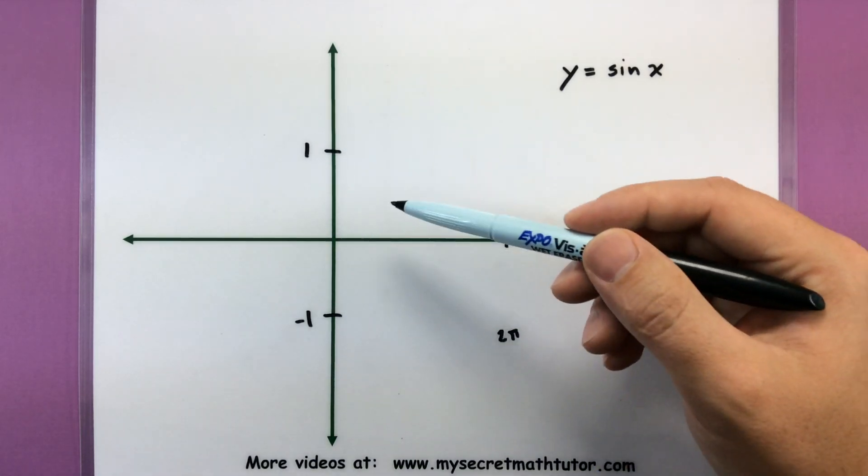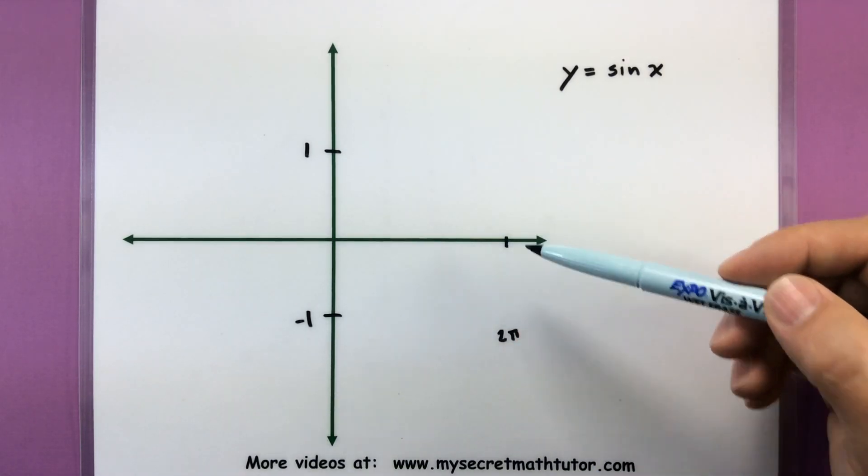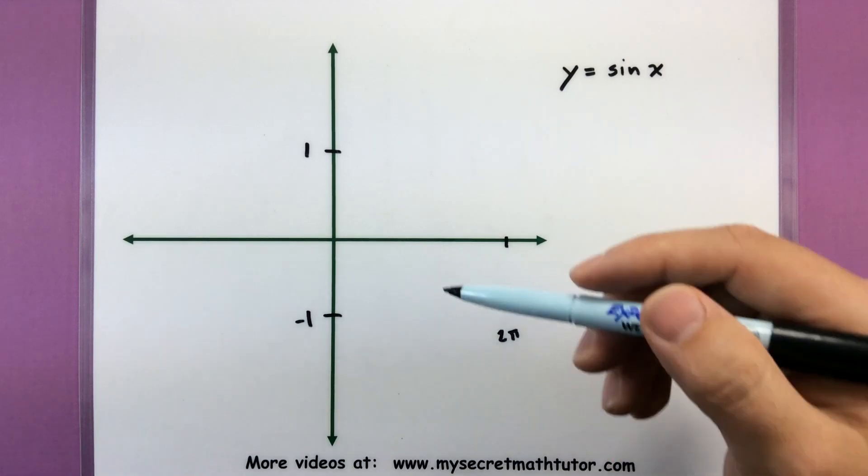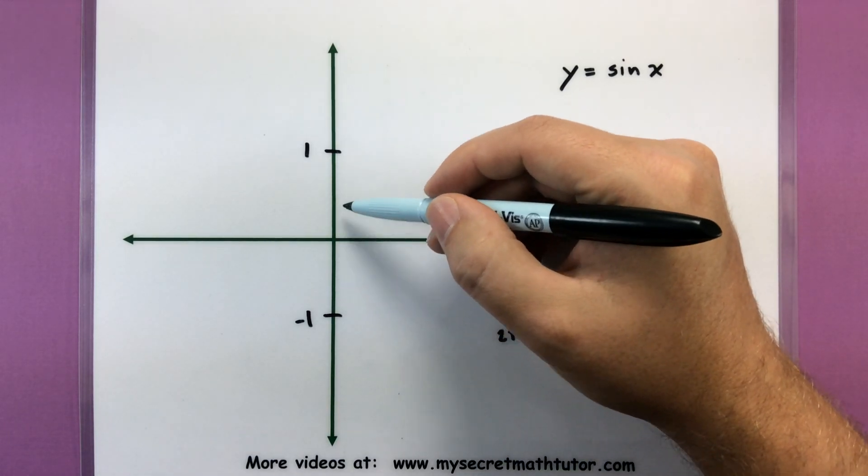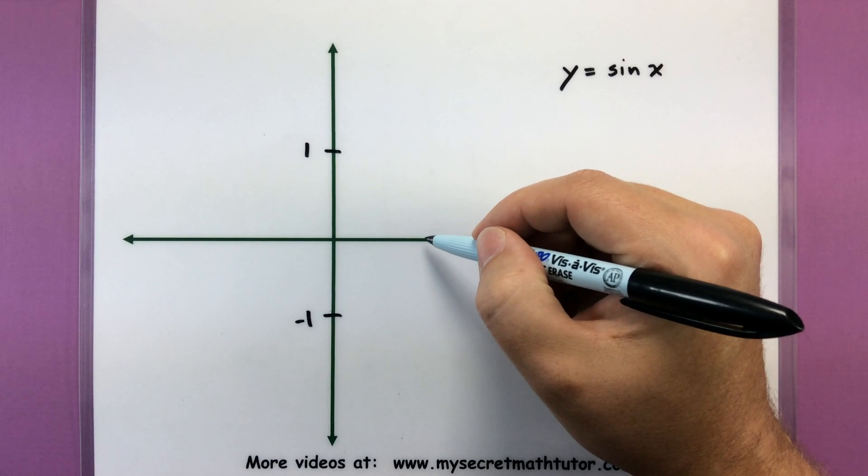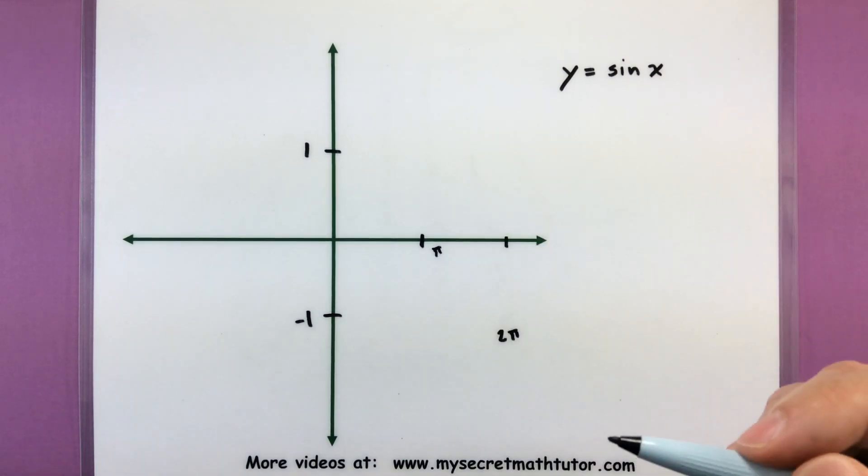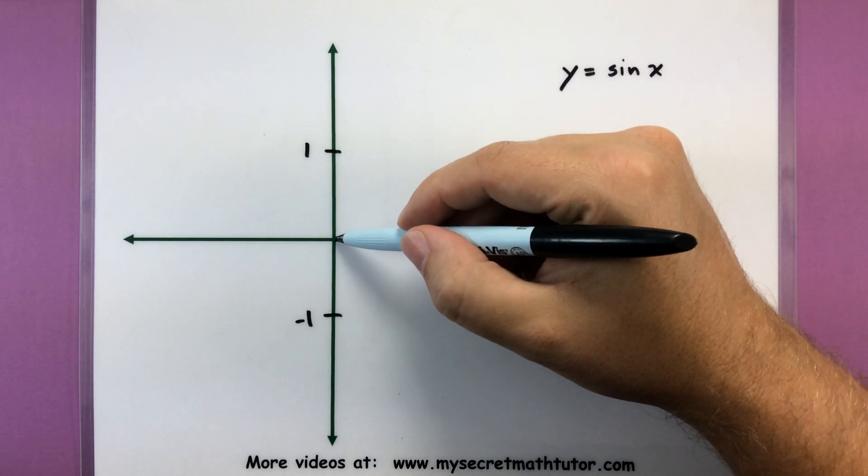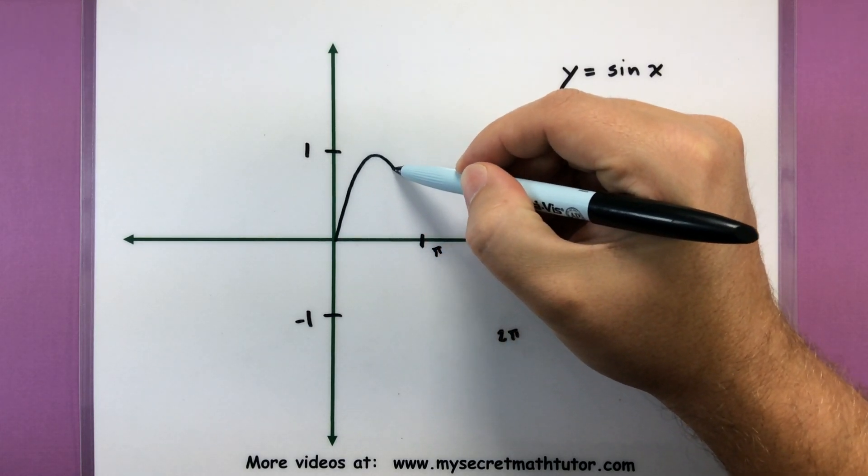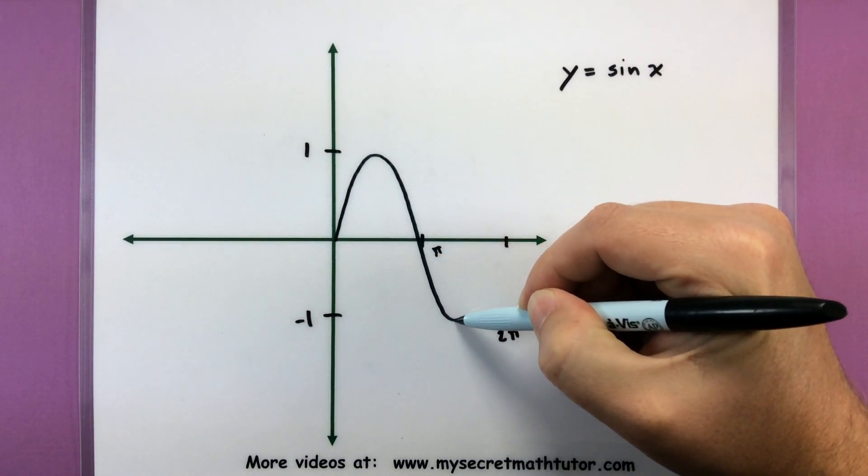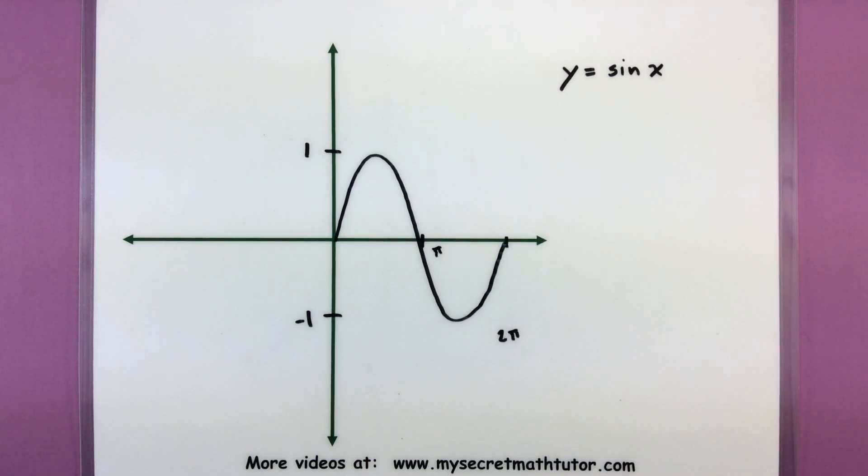So I have the high point, the low point, where one period would begin and end, and now I want to think of the shape of it. The shape of it is going to be this nice S curve. When we get halfway through at exactly pi, we should be going through the x-axis. So now we just want to make that nice S shape. So there's one peak, there's the bottom peak, and there's one period.